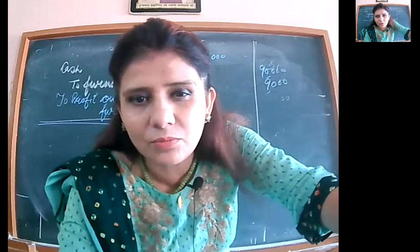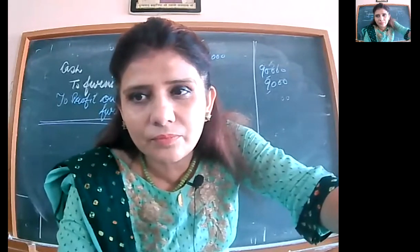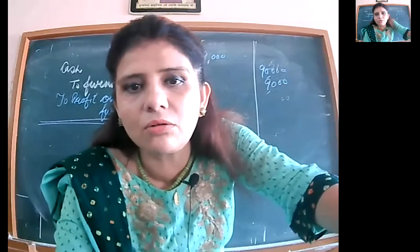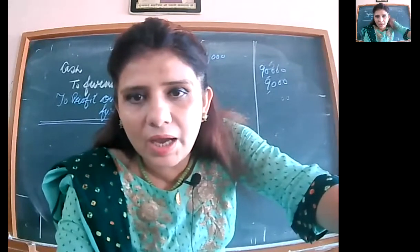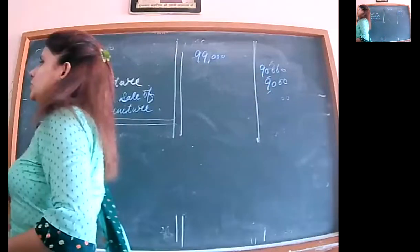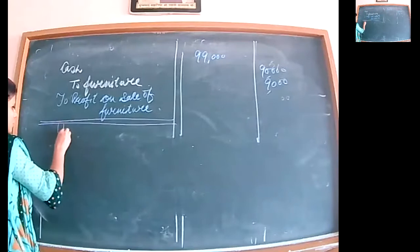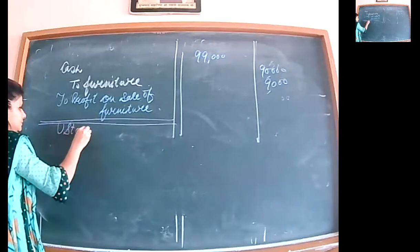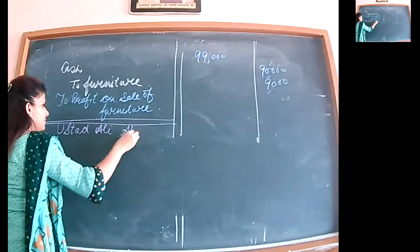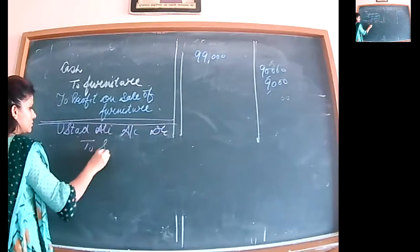When the person's name is there, we have to make him our debtor — sale is to be assumed on credit basis. Entry: Ustad Ali account debit to sales account — Rs. 1,10,000 — with selling price. Narration: being goods sold on credit.